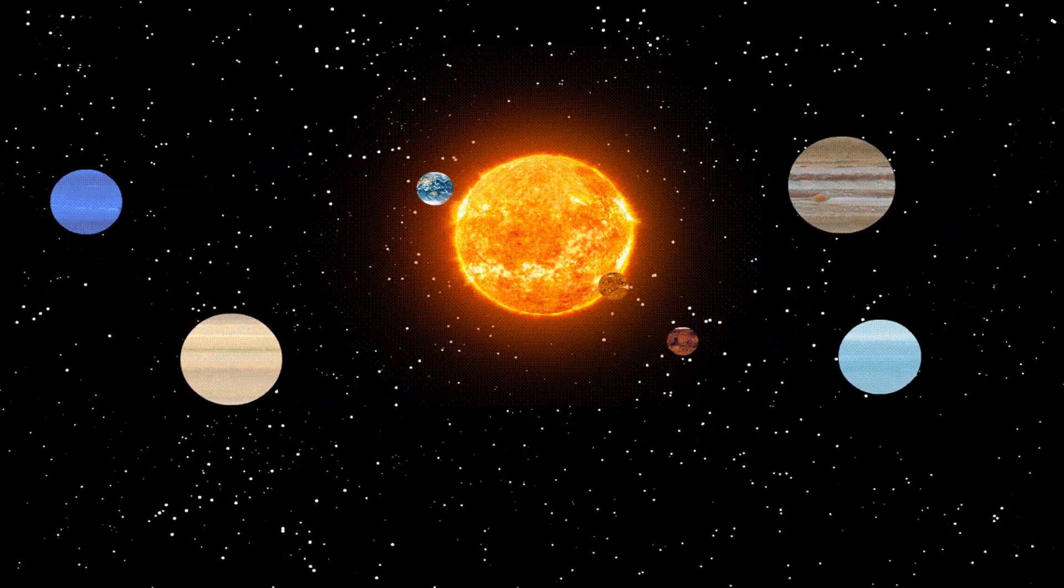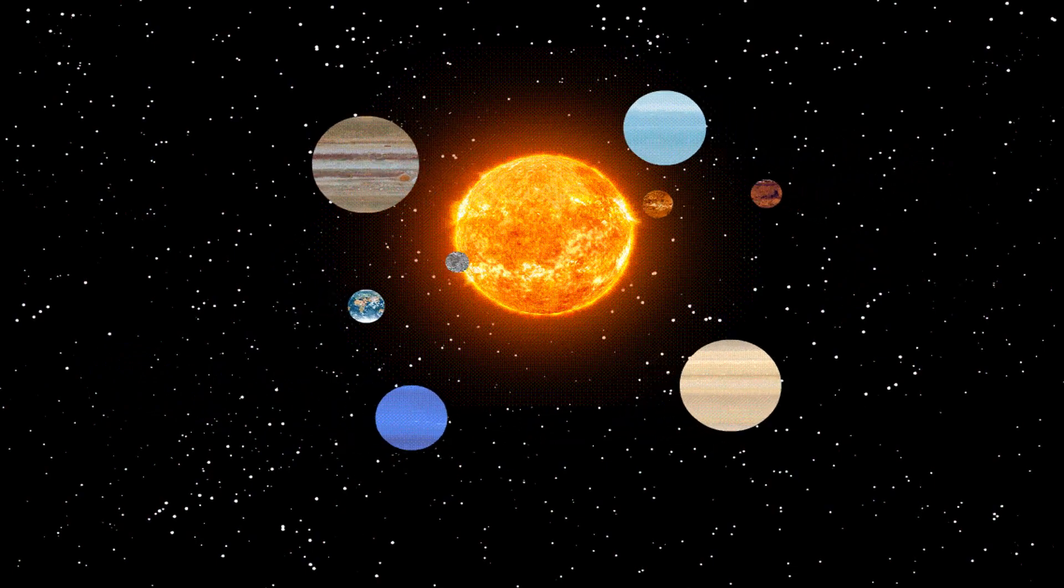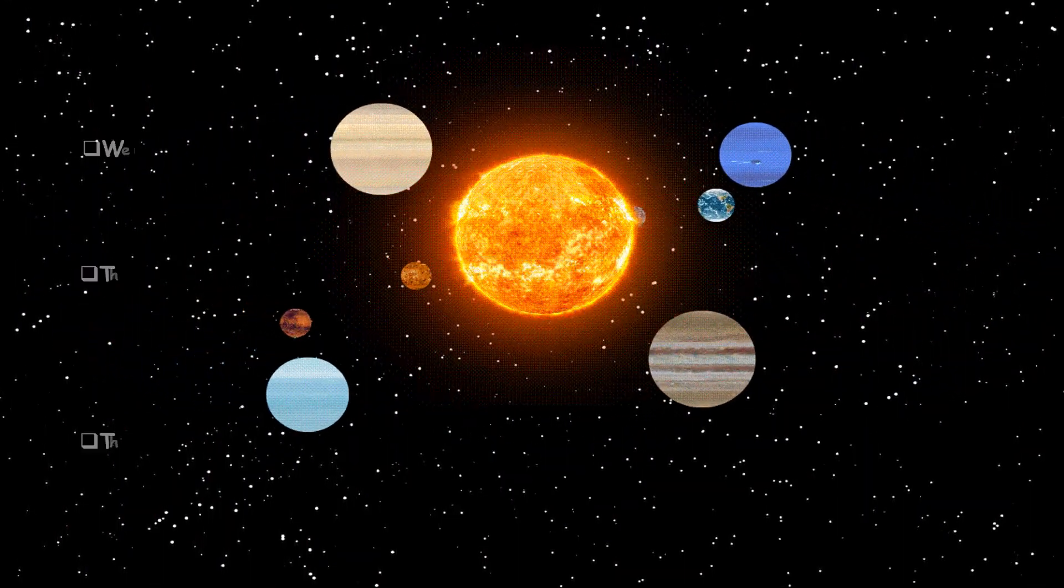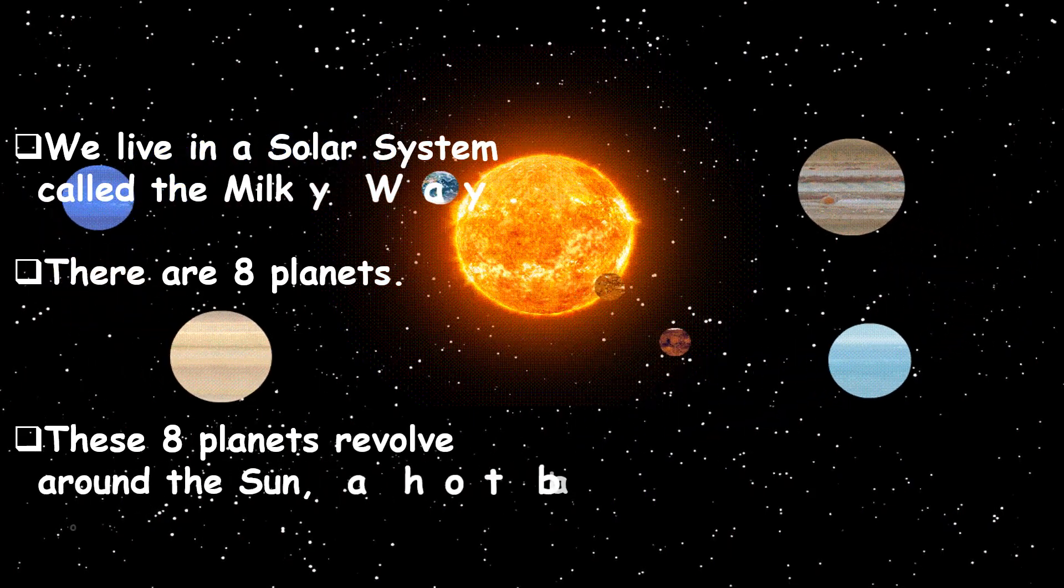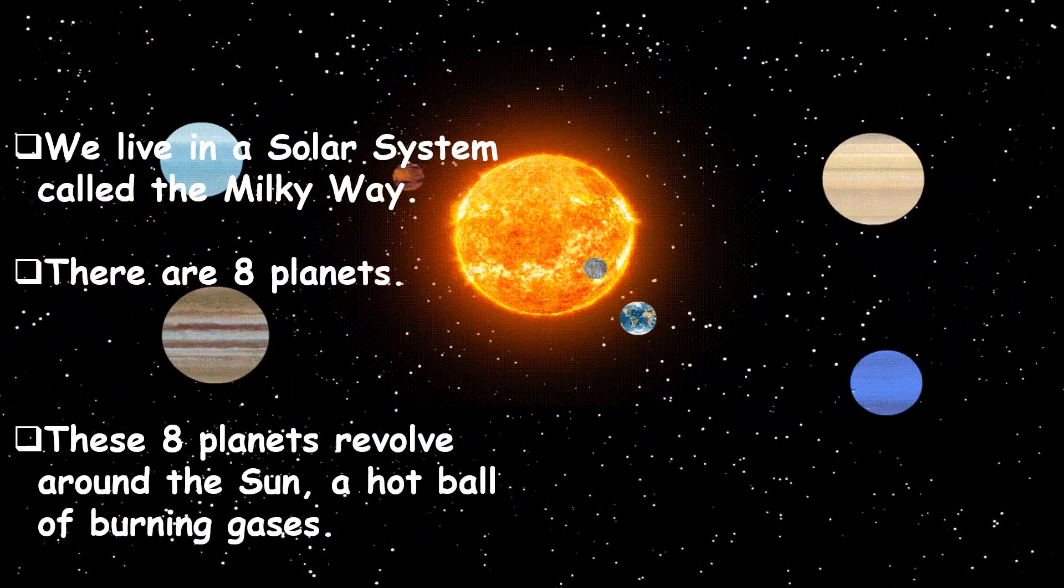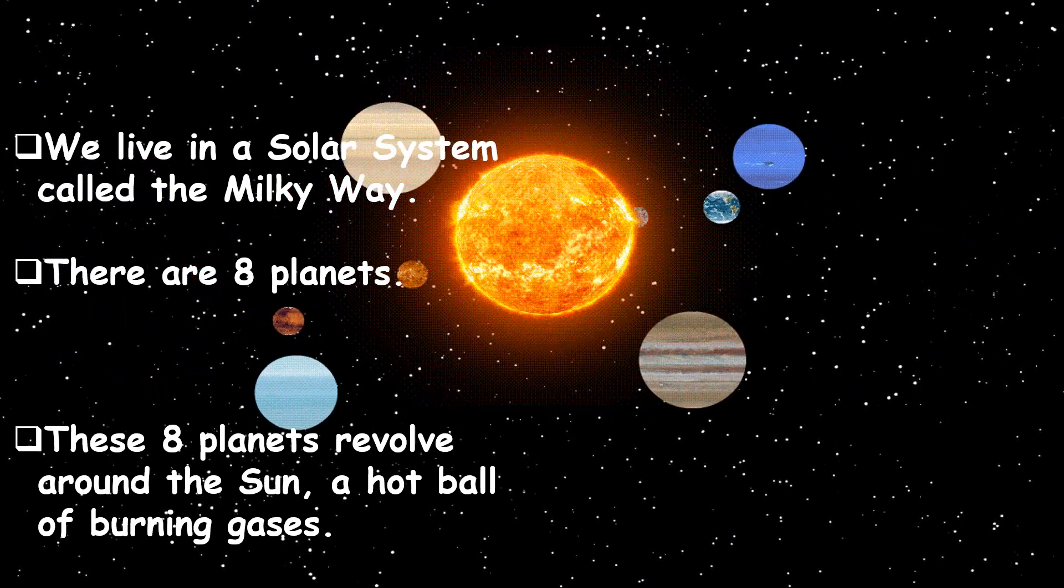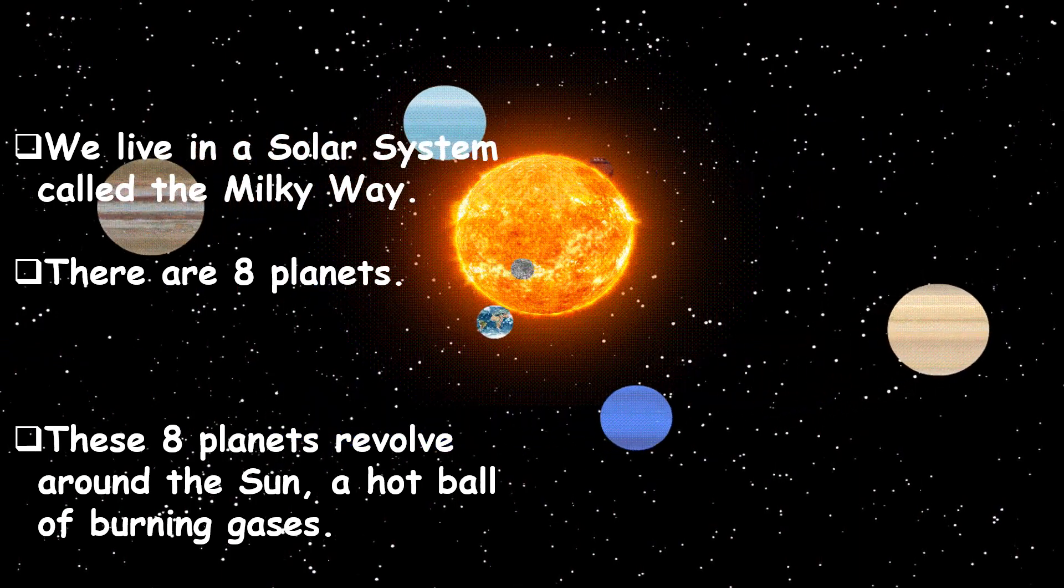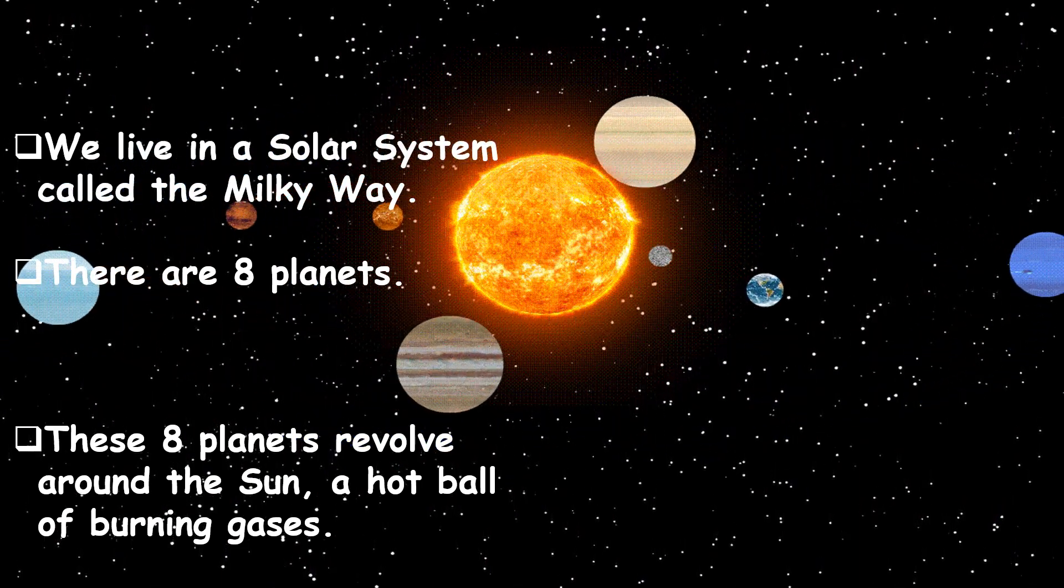Look at that. Eight planets, they are revolving around the sun. We live in a solar system called the Milky Way. There are eight planets. These eight planets revolve around the sun, a hot ball of burning gases.